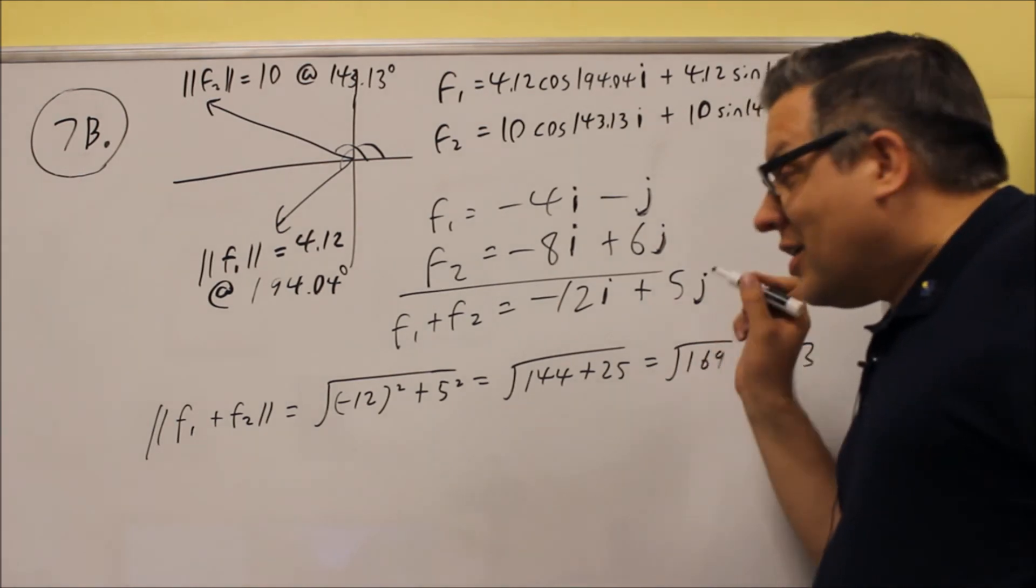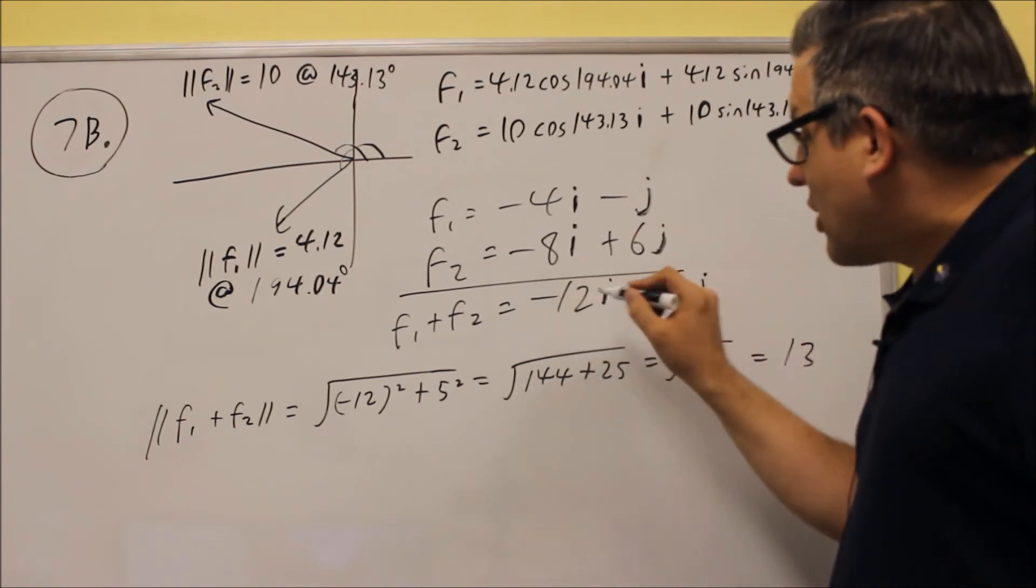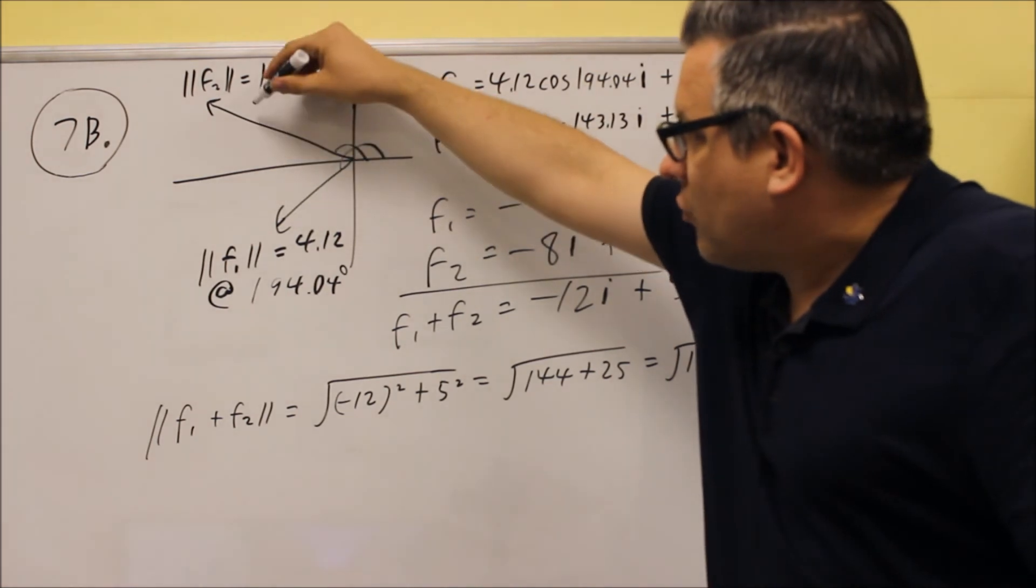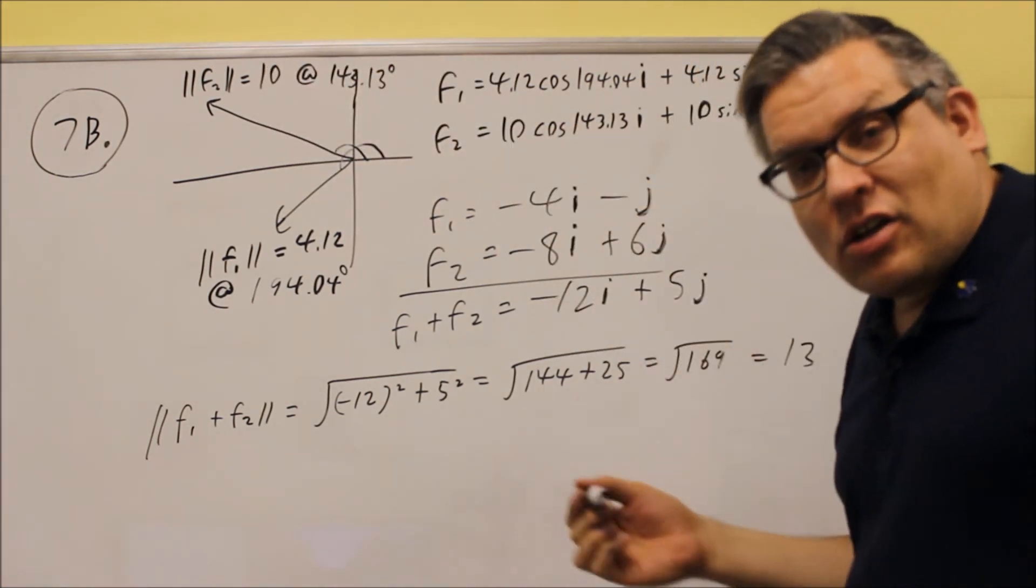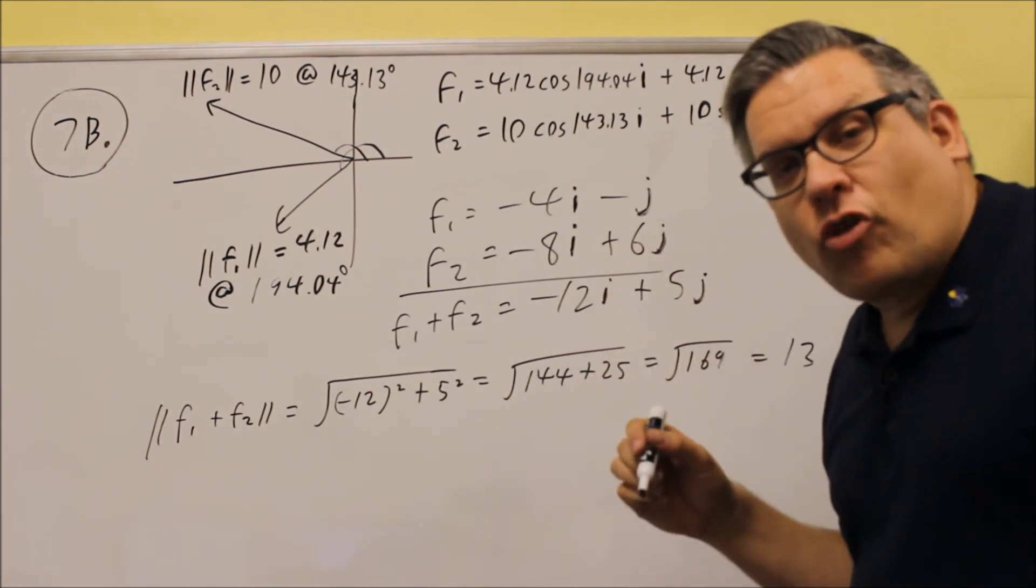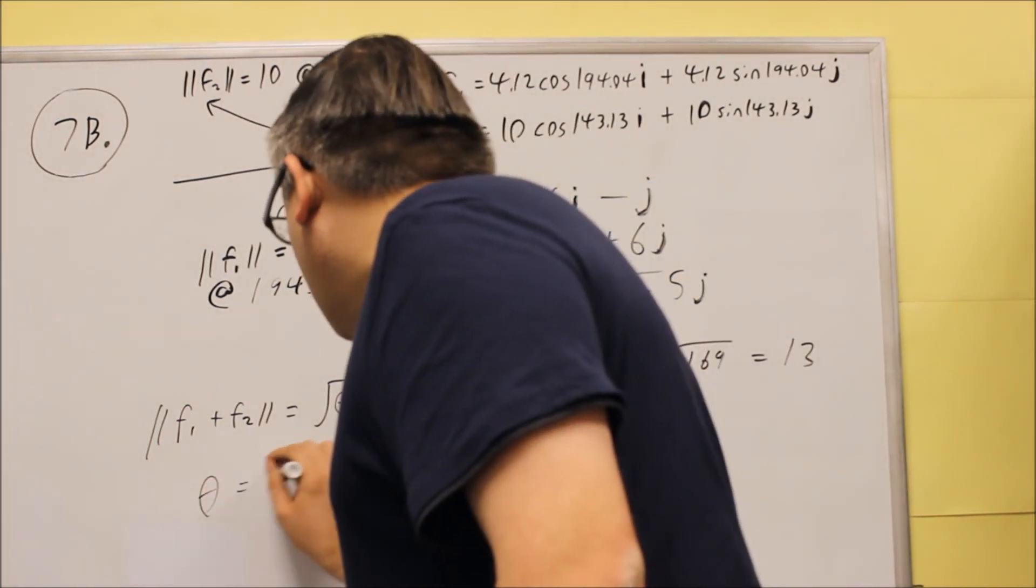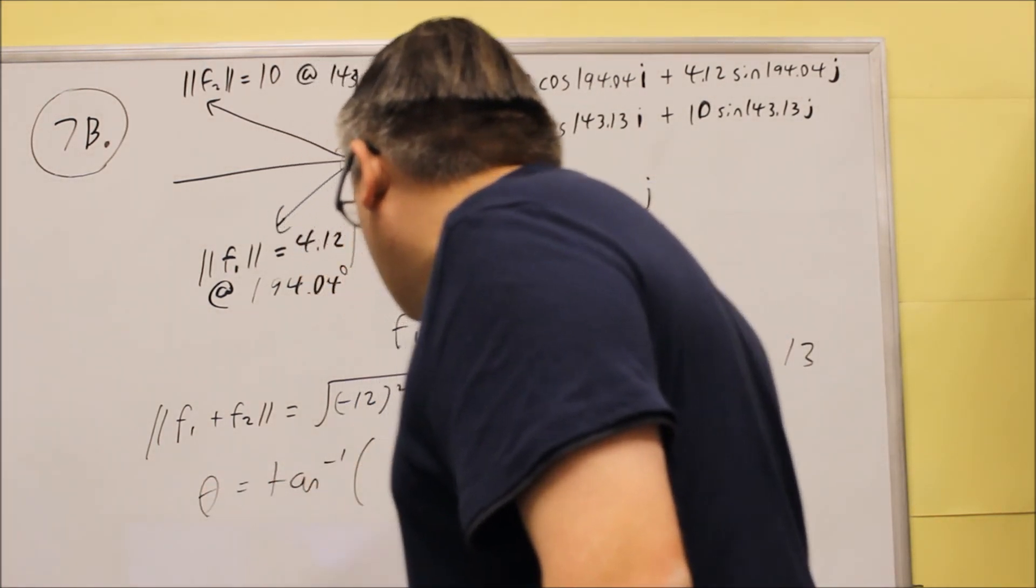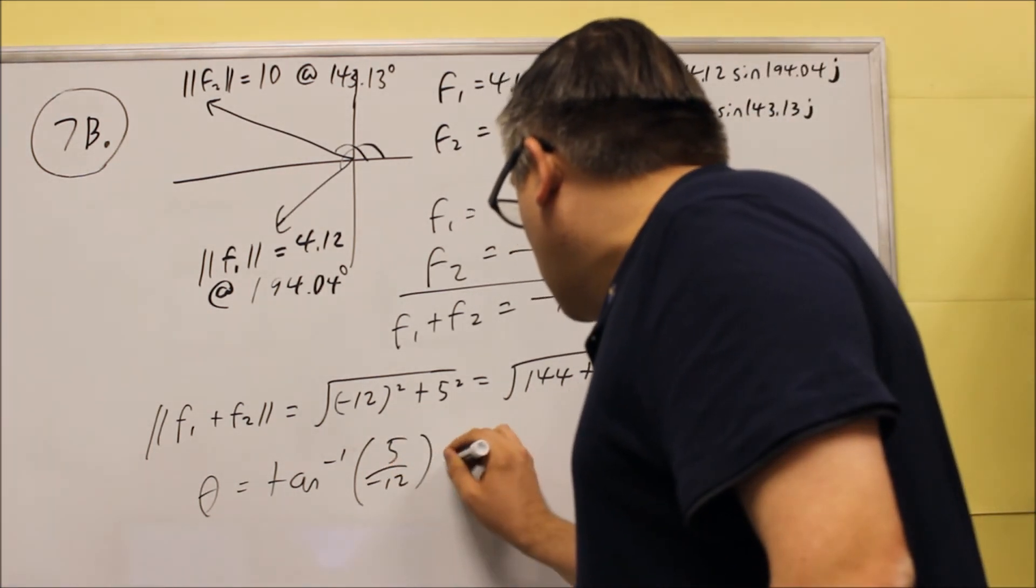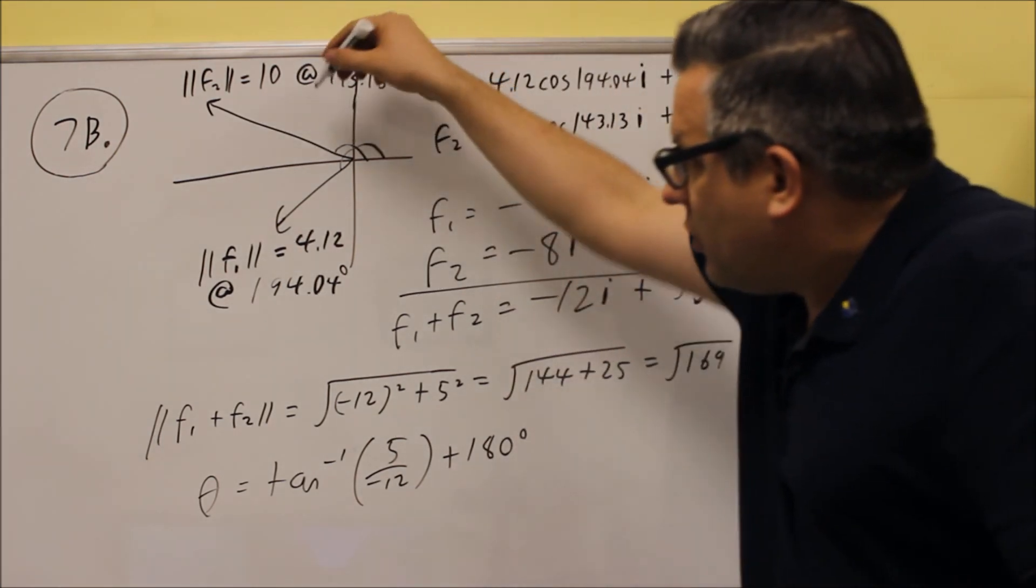So now we want to get the angle, and the angle depends on what quadrant we're in. And we have a negative x value and a positive y value. And so if we have negative x value and a positive y, we end up in the second quadrant. So second quadrant requires us to do the inverse tangent formula, but we have to add 180. And so we're going to do, so theta equals inverse tangent of y over x. We're going to do 5 over negative 12.